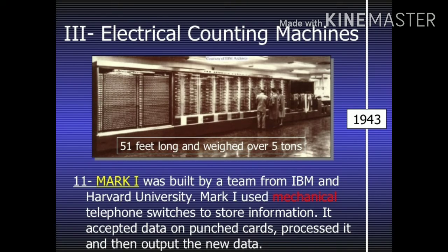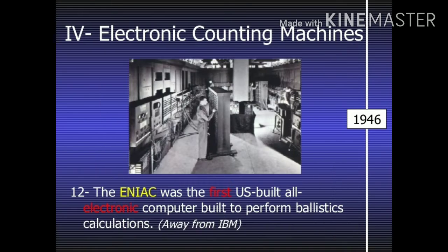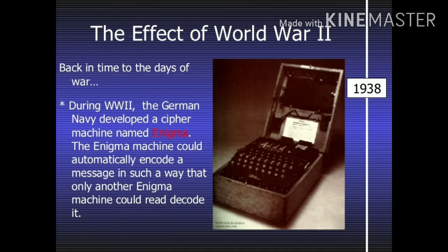In 1953, International Business Machines — IBM — with its 650 and 700 series computers made their mark in the computer world. During this generation, over 100 computer programming languages were developed. Computers had memory and operating systems, and storage media such as tape and disk were in use, along with printers for output.